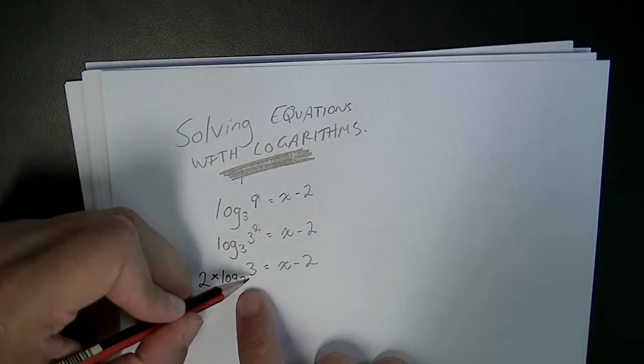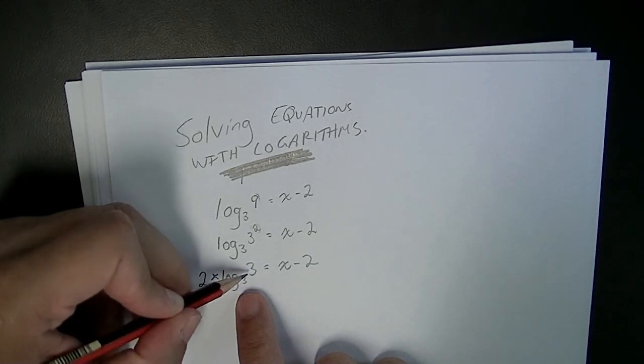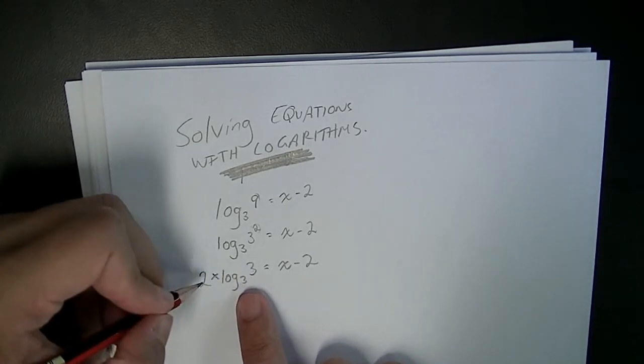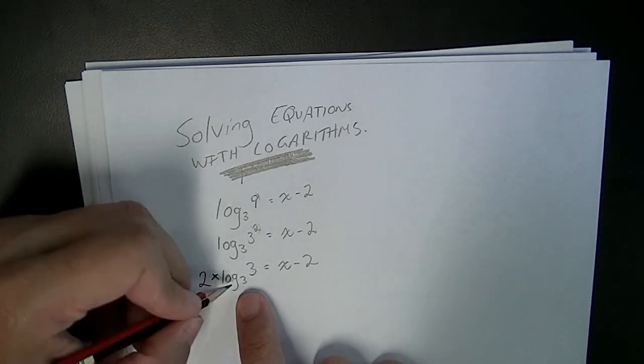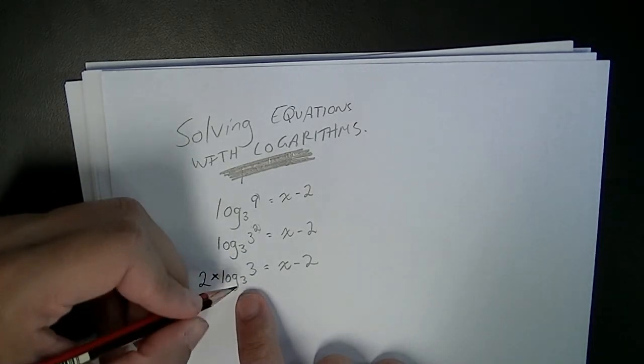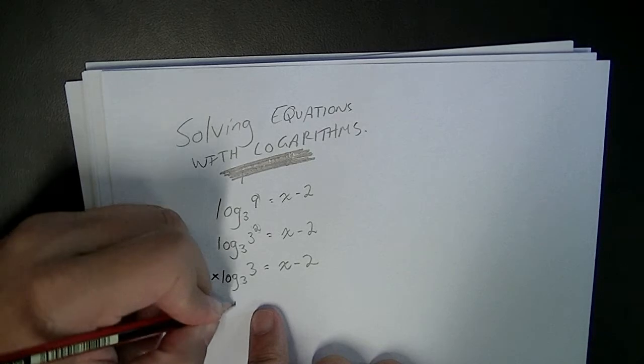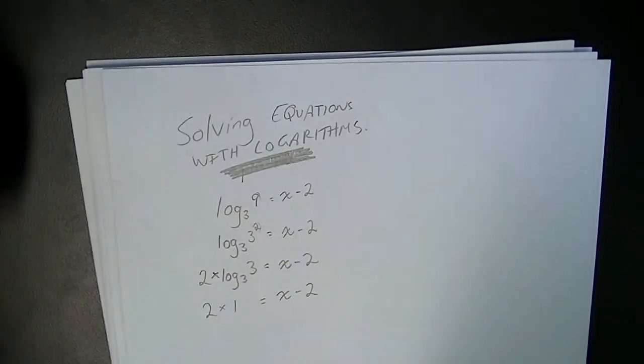Now when you see the same here, base and this number here, 3, 3, you should remember from your log laws that that's going to be equal to 1, so it's going to be 2 times 1 is equal to x minus 2.